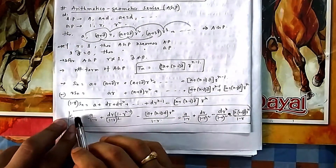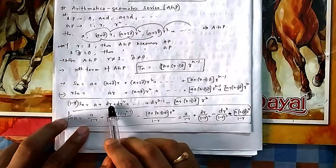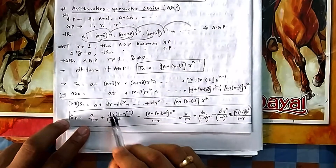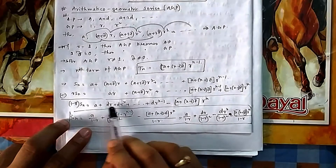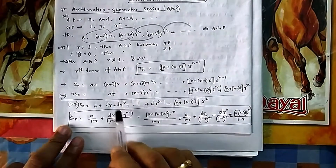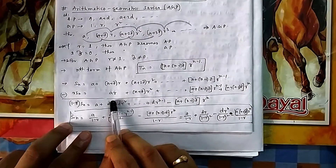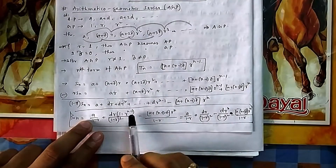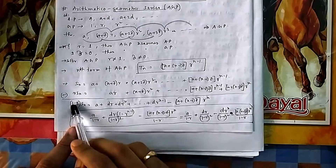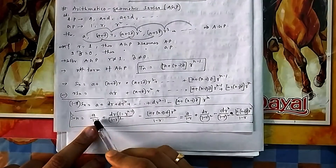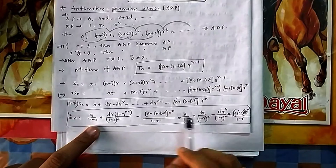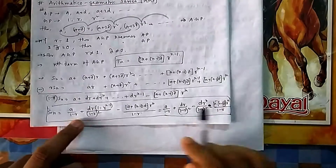Taking d common from the remaining terms, you get r + r² + ... + r^(n−1), which is a GP with first term dr and common ratio r, having (n−1) terms. Its sum is dr·(1 − r^(n−1))/(1 − r). Dividing through by (1 − r) and rearranging gives the complete sum formula for AGP.